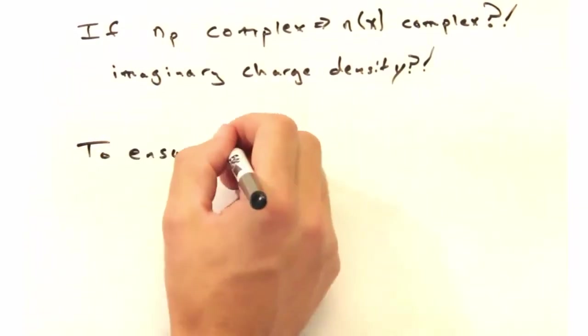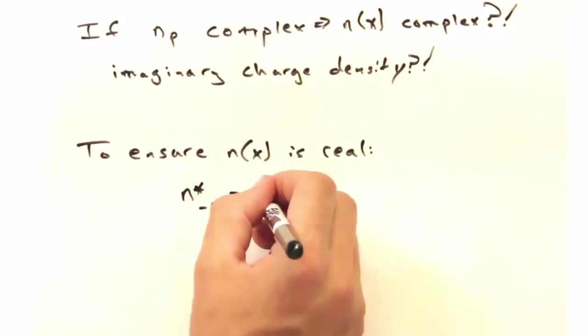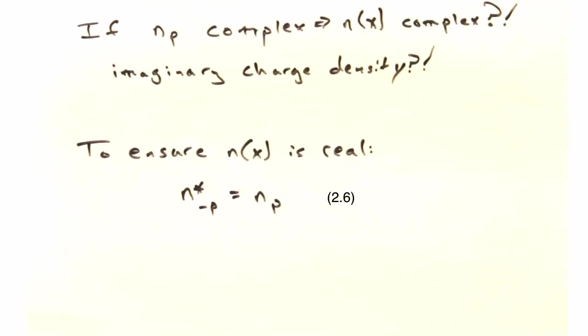Yeah, you're right. And in order to ensure that n of x is real, we just need to put a constraint on our coefficients. Page 28 of Cattell, version 8, goes through and proves this if any of you at home are curious.